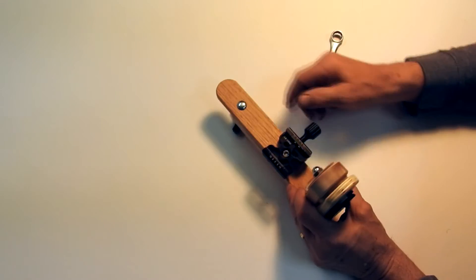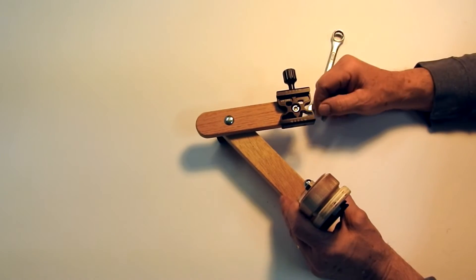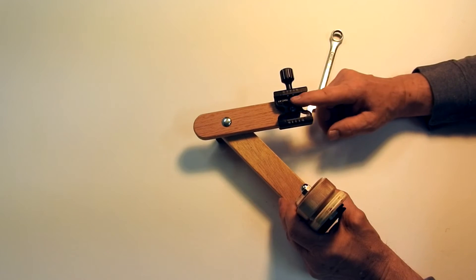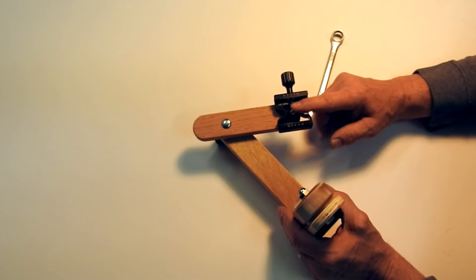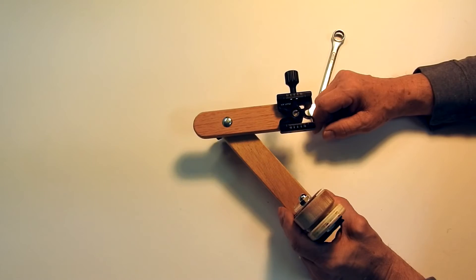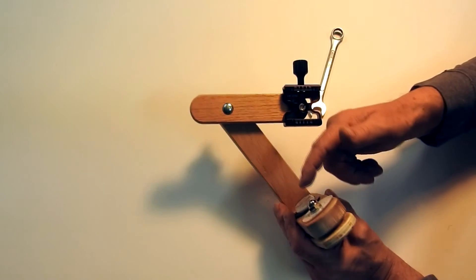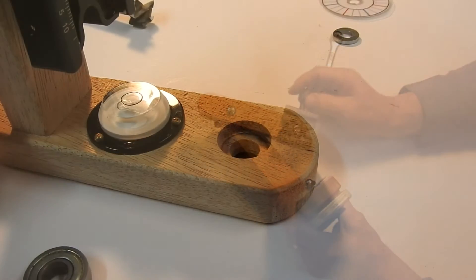On the vertical arm I've put a quick release adapter and it's important you put this on first so that when you're measuring distances your camera is mounted into that to measure the base distance from the base of the camera to this rotation point. You'll see that in the video a little bit later.